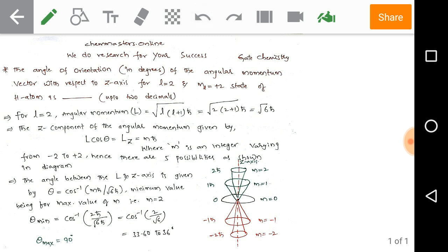Here M indicates integer varying from minus 2 to plus 2. That is simply magnetic quantum number ML. We have given ML plus 2. In the formula M indicates minus 2 to plus 2, hence there are five possibilities as shown in the diagram.